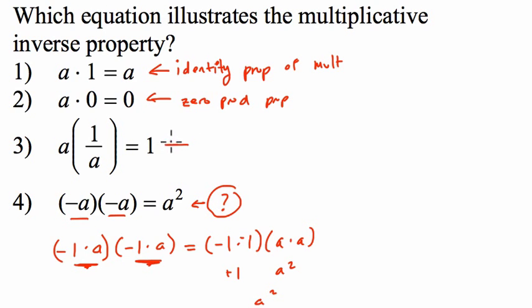Now choice three is the only one left, and that's the answer. Let's talk about why. a times one over a—that's the same as a times one, or a, over a. We're just multiplying right there. And anything divided by itself is one. That's the multiplicative inverse property.